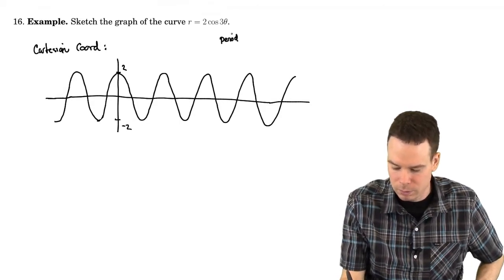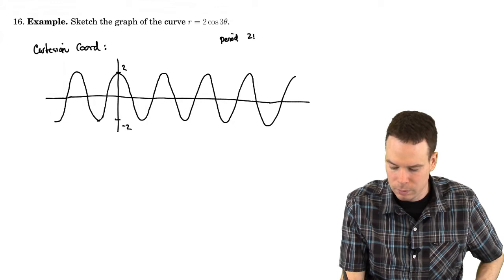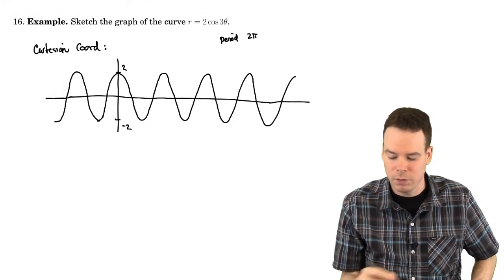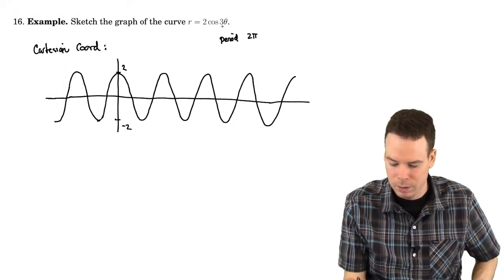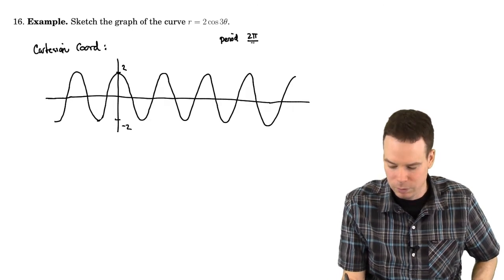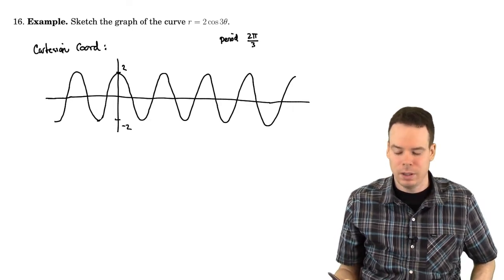What's its period? Well, regular cosine function is period 2π, but this one's been compressed by a factor of 3. So its period is now 2π by 3.